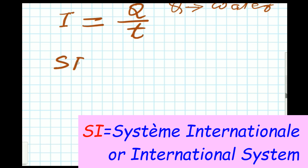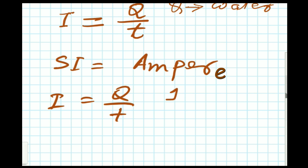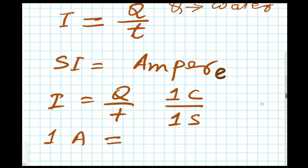What is ampere? Using I equal to Q by t, if Q equals one coulomb — coulomb being the unit of charge — and time is one second, then the current is one ampere. That means one ampere equals one coulomb per second.